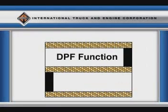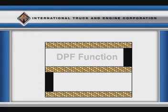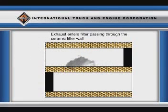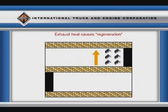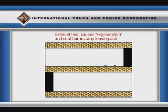The diesel particulate filter, or DPF, is the primary technology to meet the 2007 emissions limits for particulate matter. Simply put, the DPF captures soot and burns it off during regeneration. Ash left over from burning engine oil and oil additive components collects in the DPF over a prolonged time and eventually must be disposed of.